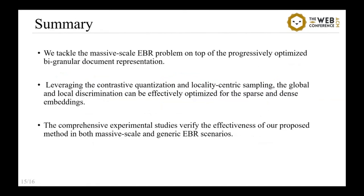In conclusion, we propose the Progressively Optimized Bi-Granular Document Representation for scalable embedding-based retrieval. In this work, contrastive condensation is used to generate the sparse embeddings, which leads to memory-efficient candidate search. Based on the candidate distribution generated by the sparse embeddings, dense embeddings are trained with locality-centric sampling, achieving the best post-verification accuracy. Comprehensive evaluations were performed, whose results verify the effectiveness, efficiency, and scalability of our method. The code for this work has been released on GitHub.